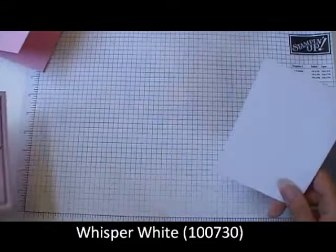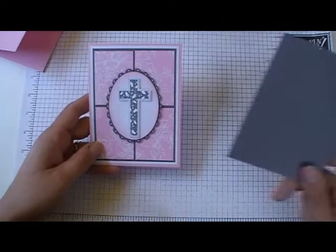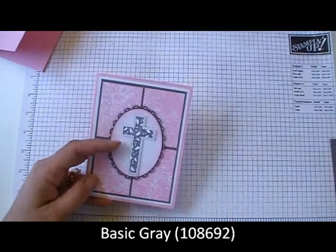Then I have my white, which, let me just bring back the sample, which is your next layer five and a quarter by four and then my basic gray at five and three eighths by three and three quarters.